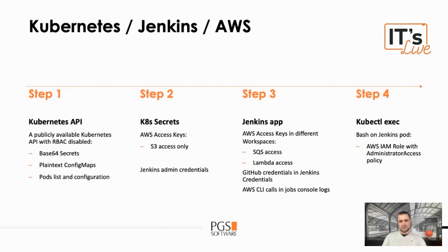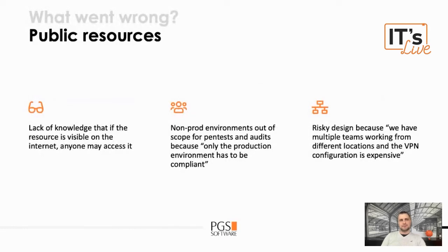From the perspective of the Kubernetes owner or the infrastructure owner, what went wrong? First of all, public resources. Usually teams are exposing their resources because they don't know how to secure them correctly. And sometimes they may think, 'oh, it's just the IP — it's a random IP, so let's just leave it like that.'